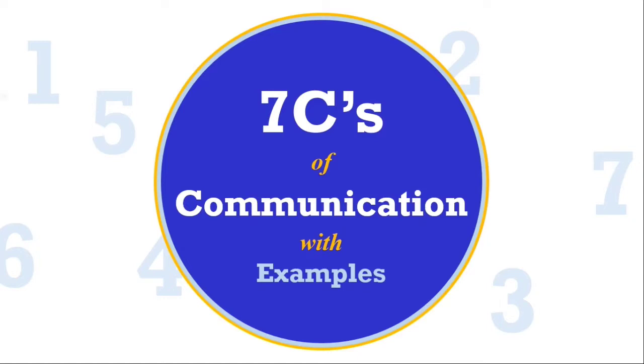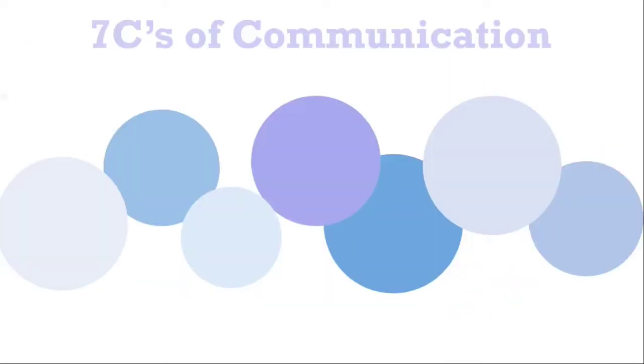These principles are highly effective whenever you are communicating in business aspects or in your formal writing styles. What are they? Number one is complete, concrete, clear, courteous, concise, consider, correct. All these are the seven C's of communication and they all start with the letter C. By the end of this video you will have no confusion about any C of communication.